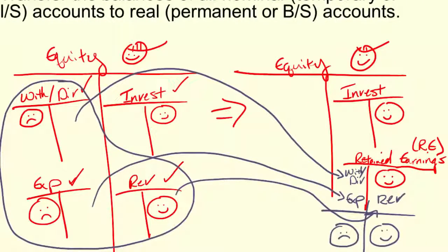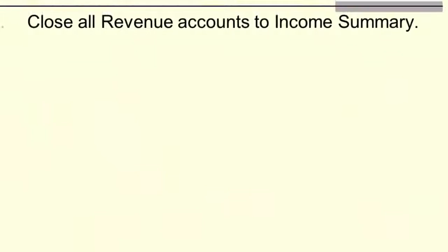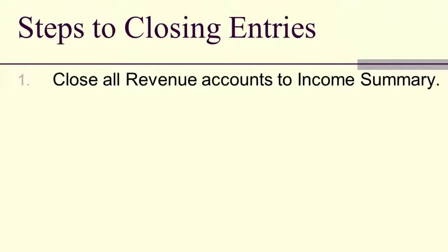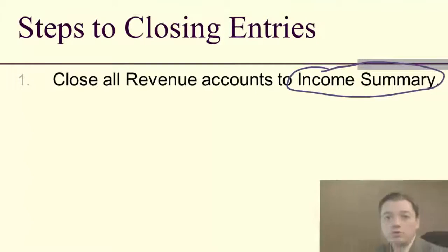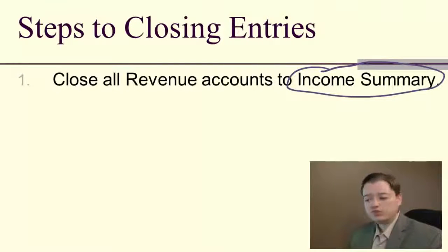Now let's take a look at the steps to our closing entries. Step number one is taking all the revenue accounts and putting them into this special account called income summary. Each of the financial statements has some kind of a check figure. Balance sheet, assets have to equal total liabilities and equity. The statement of cash flows, that ending cash balance has to equal the cash on the balance sheet. Income statement doesn't seem to have a check figure like that. Well, it does from the closing entries. We close all of our income statement accounts into income summary and use that as a check.